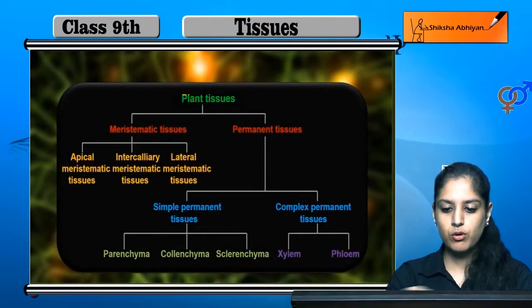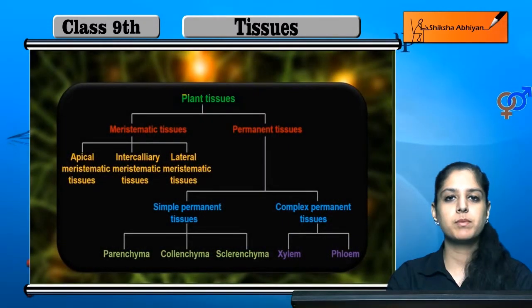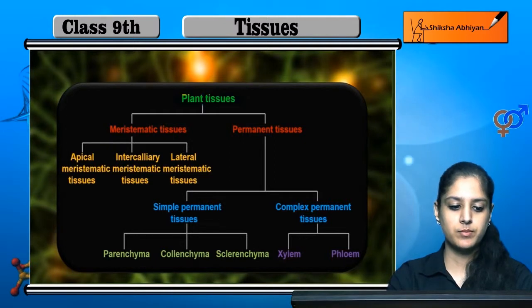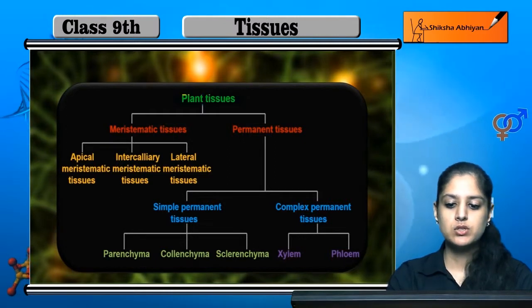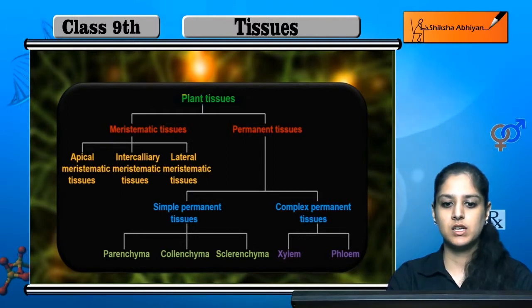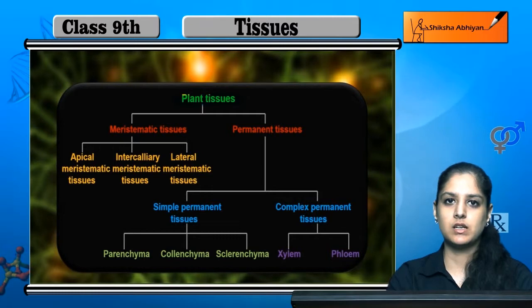This is a flowchart which summarizes all the plant tissues' classification. So now, these tissues we can study in detail.